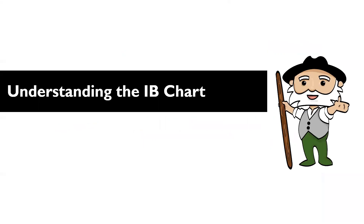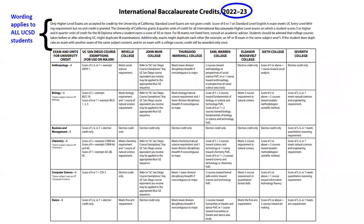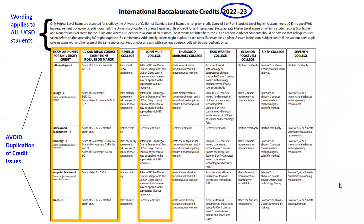Now let's understand how to read the IB chart. Surprise — reading this chart is the same as reading the AP chart. The same columns are listed, but all the information is about IB scores. Again, only higher-level IB exams grant college credit; standard level exams do not.